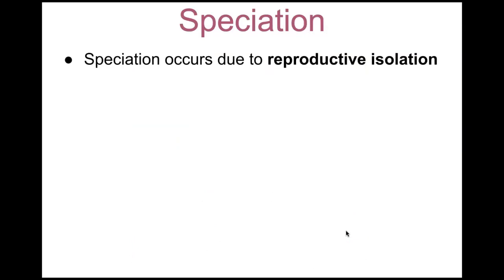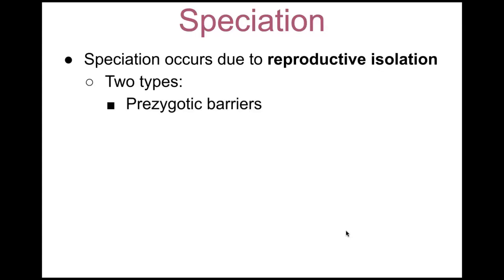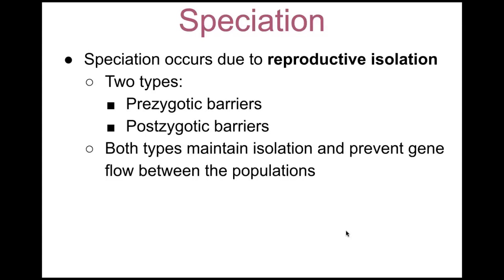Speciation occurs due to reproductive isolation, and there are two types: pre-zygotic barriers and post-zygotic barriers. Ultimately both types maintain isolation and prevent gene flow between the populations.